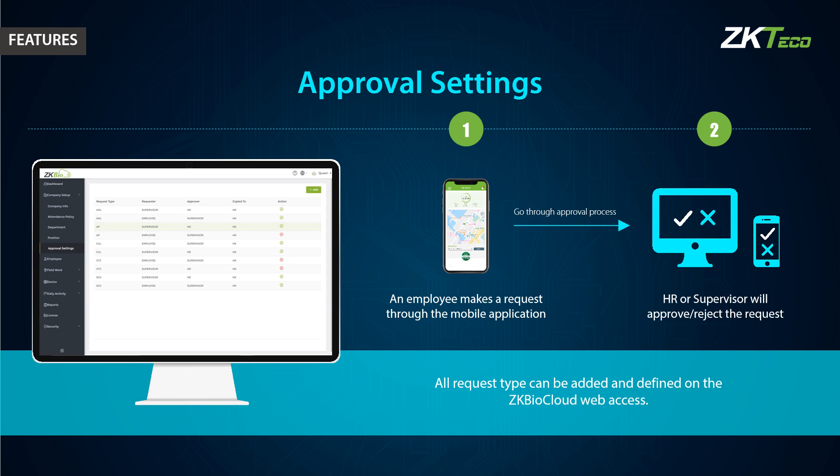All request types can be added and defined on the ZK by Cloud web access. An employee makes a request through the mobile application, and the HR or supervisor can approve it via the mobile application or web application.